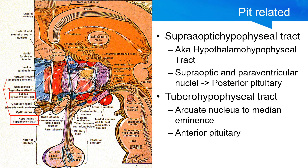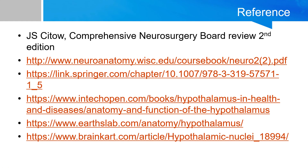There are two pituitary-related tracts. The supraopticohypophyseal tract, also known as the hypothalamohypophyseal tract, is responsible for the posterior pituitary. The tuberoinfundibular tract carries information between the arcuate nucleus and the median eminence to control the anterior pituitary. Thank you, and we will see you next time.